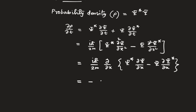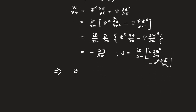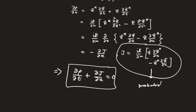We define del ρ/del t equals del j/del x, where the probability current j is defined as ih-bar over 2m times (ψ* del ψ/del x minus ψ del ψ*/del x). From this structure we can see the continuity equation of quantum mechanics, where j is known as the probability current.